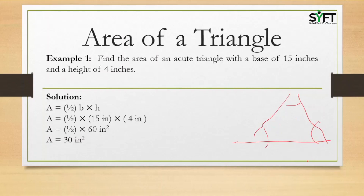So using the formula: area equals half base into height — that is half into 15 inches into 4 inches — which gives half into 60 inches squared, so the area equals 30 inches squared.